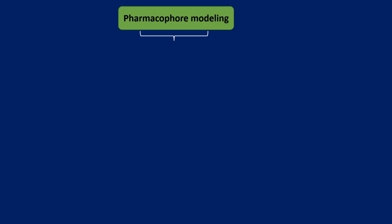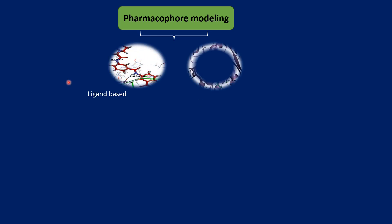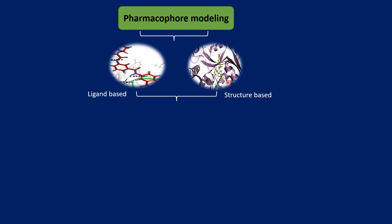In pharmacophore modeling we have two approaches: ligand-based and structure-based. Structure-based pharmacophore modeling is used when the protein structure is available. We take the protein structure, study its active site, and based on the active site, pharmacophoric models are generated and validated. In ligand-based pharmacophore modeling, the protein structure is not available — only ligand information is used.